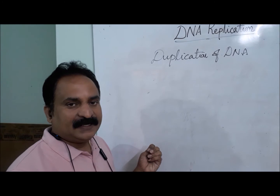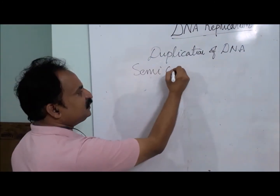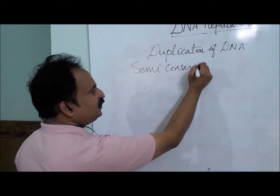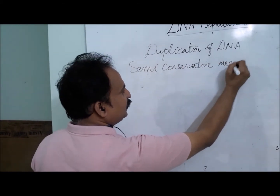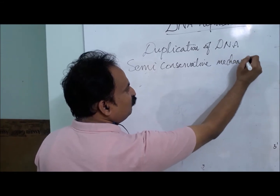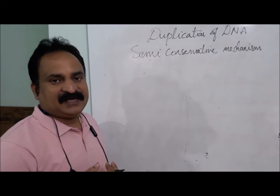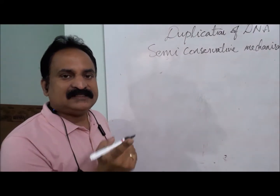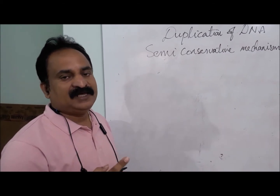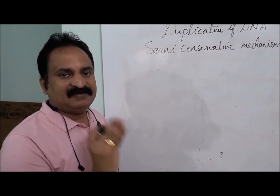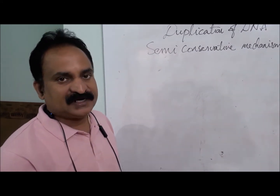The Watson-Crick model of DNA follows the semi-conservative mechanism of DNA replication. In the semi-conservative mechanism, one strand is the parental strand and the other is the new strand. The parental strand acts as a template for the synthesis of the new strand.